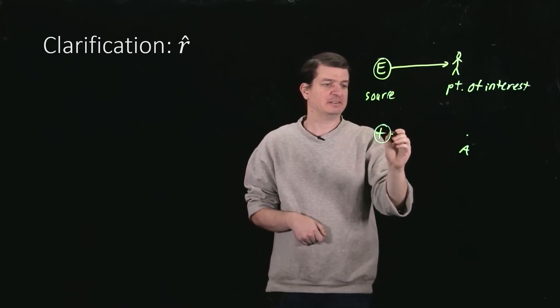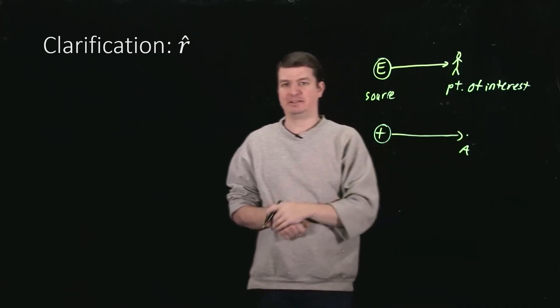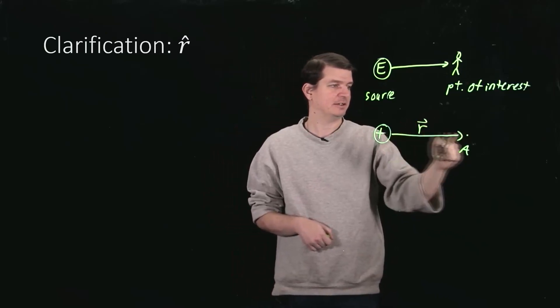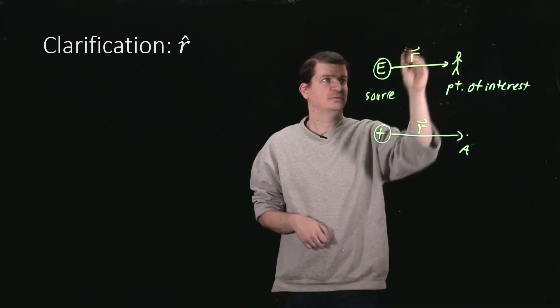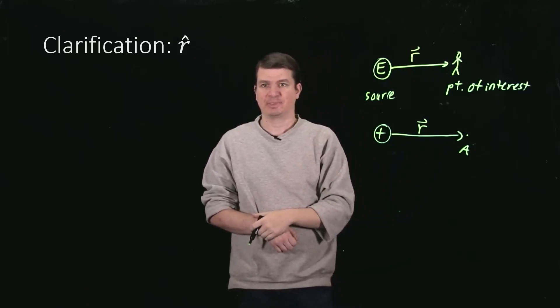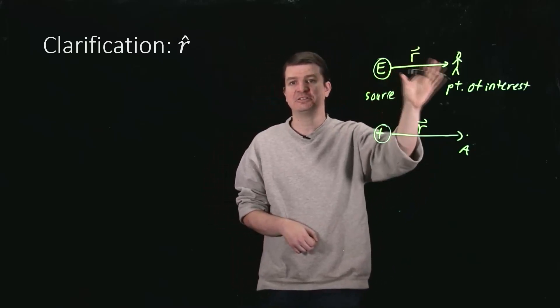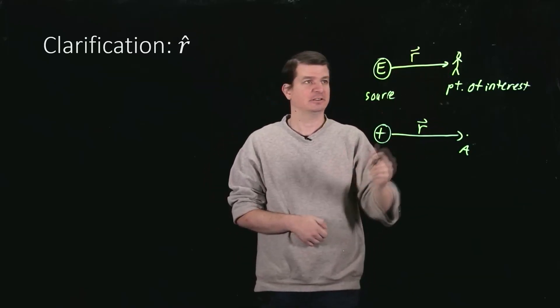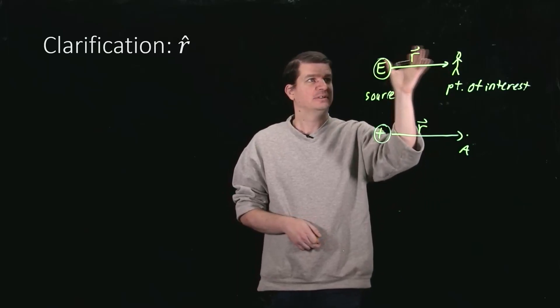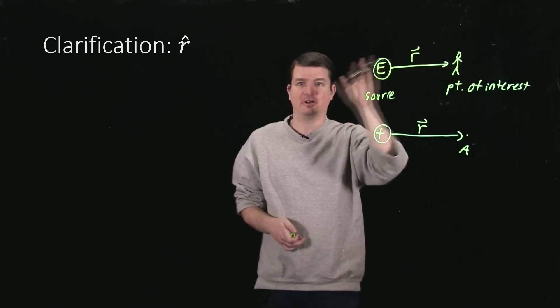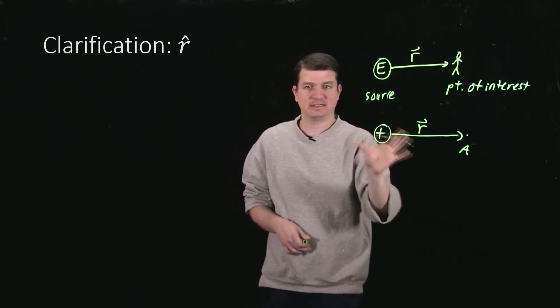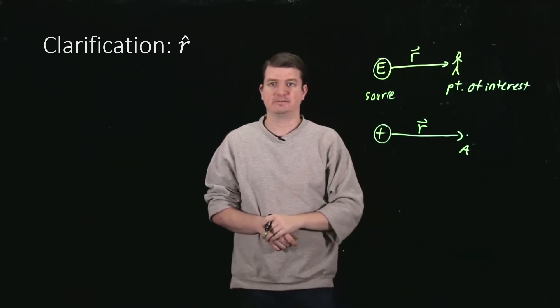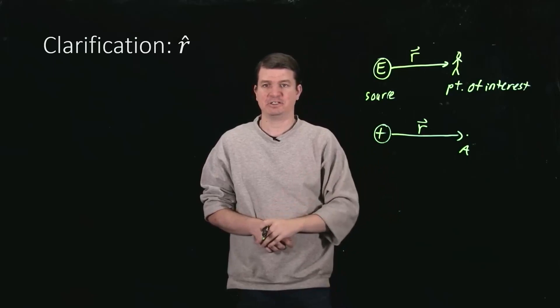Or at least rather the R vector is always this vector that connects from the source to the point of interest. And r-hat is just the direction of that vector. So this thing has a length of however far the person is from the Earth. This thing has a length of however far point A is from the positive charge here.